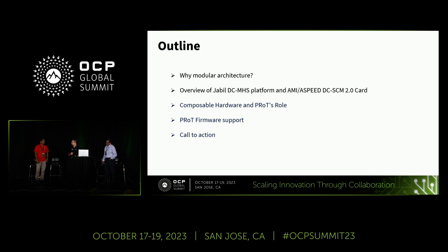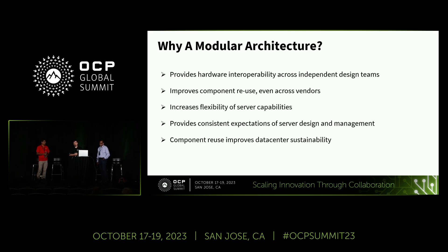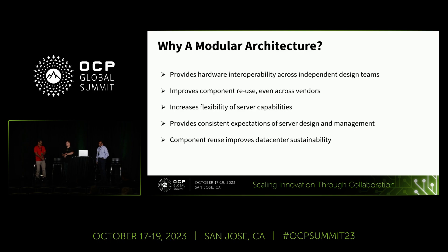We'll also cover total platform root of trust support and then we'll have a call to action at the end. So why provide a modular architecture? What's the value of that in a modern data center? Really what we're looking for is to provide hardware interoperability across multiple vendors. This allows a more competitive marketplace — if one vendor brings out an HPM targeted at a specific solution, that can be adopted and brought into a chassis leveraging other vendors' components.